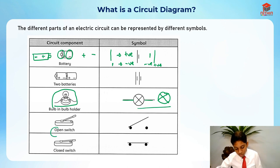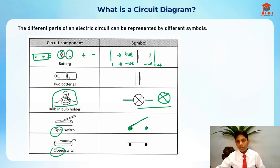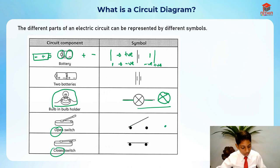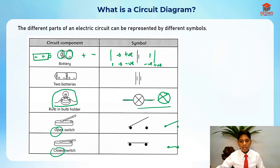For the open switch and closed switch: the open switch is represented by two dots with a line drawn upward that does not touch the next dot. A closed switch has two dots where a line connects both of them. Draw one dot here and one dot here with a gap — that's an open switch. Connect them and it's a closed switch.